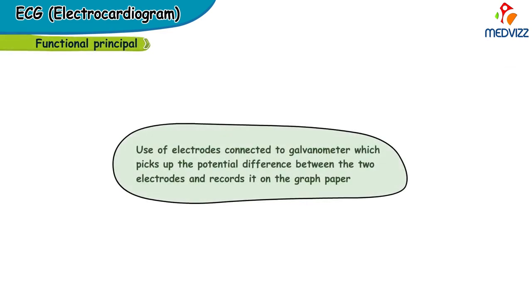The functional principle behind the recording of an ECG is the use of electrodes connected to a galvanometer, which picks up the potential difference between the two electrodes and records it on the graph paper.